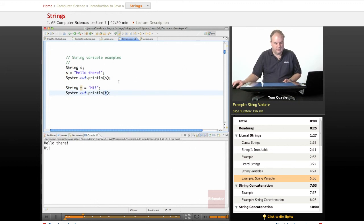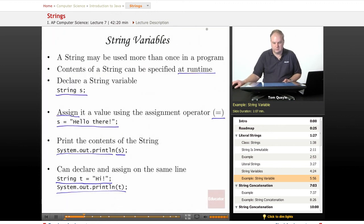And I call print line on that to print that value. So if I run this, I get first the output of hello there, which is the value of string s. And then I get hi, which is the value of string t. And they're each on their own line because I use the print line method. So that's how you use string variables.